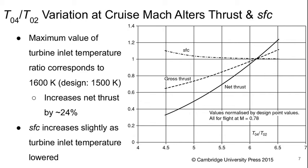The procedure developed last time is then applied, and we look at the variation of T04 over T02 and how that affects everything else. This is done at cruise Mach number and cruise altitude, so P02 and T02 essentially stay the same as well as PA, helping to minimize the free variables. The maximum value of turbine inlet temperature at 6.52 corresponds to 1600K, where the design was 1500K, and this increases the net thrust by about 24%. The specific fuel consumption increases slightly as the turbine inlet temperature is lowered, and of course the gross and net thrust fall.